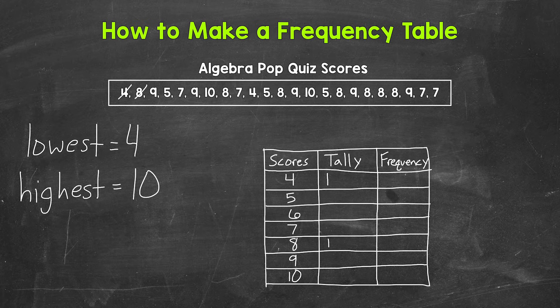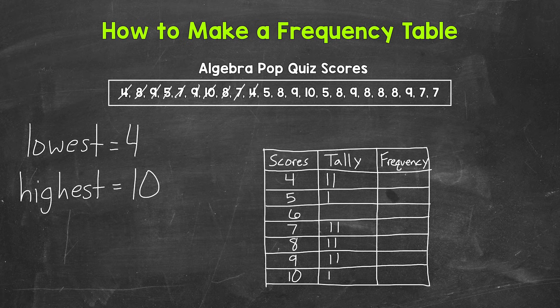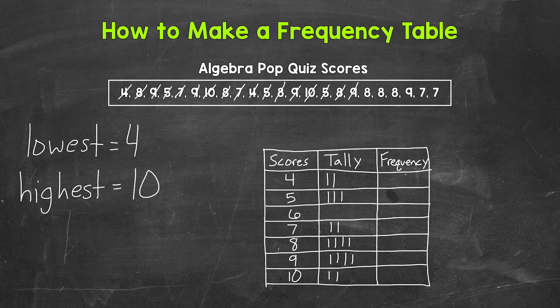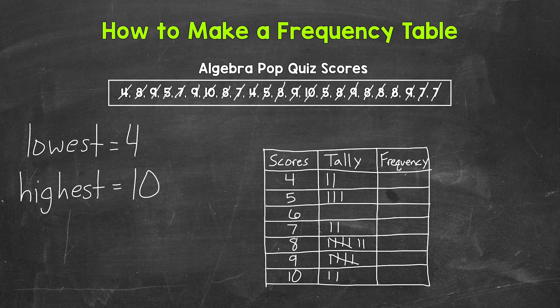So four, eight, nine, nine, five, seven, nine, 10, eight, seven, four, five, eight, nine, nine, 10, five, eight, nine, three eights in a row here, a nine, and then two seven.